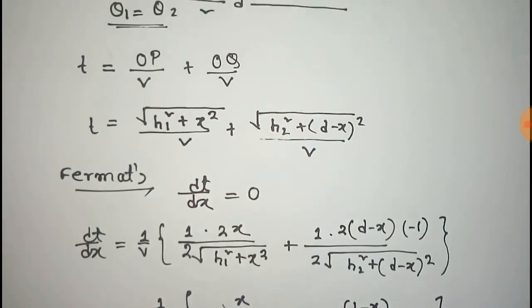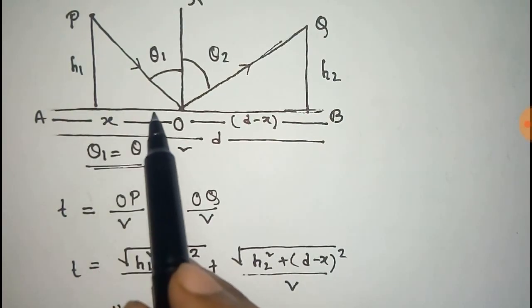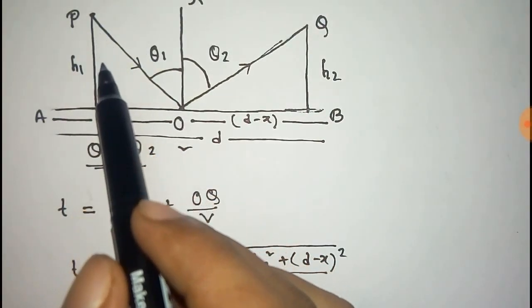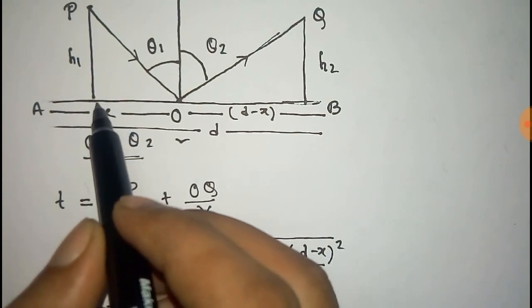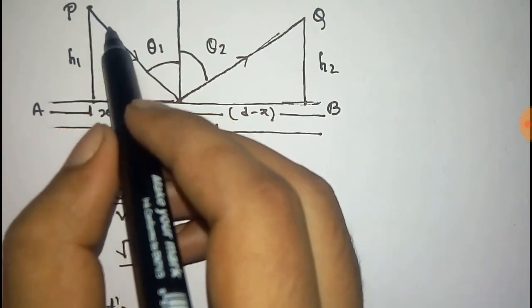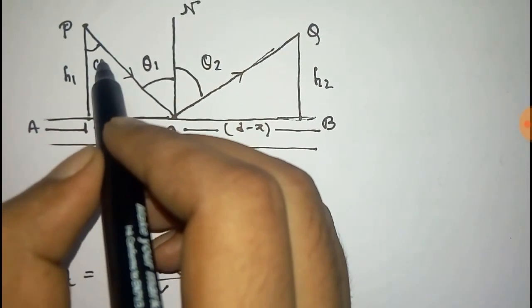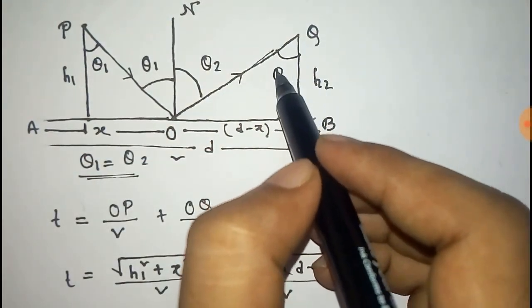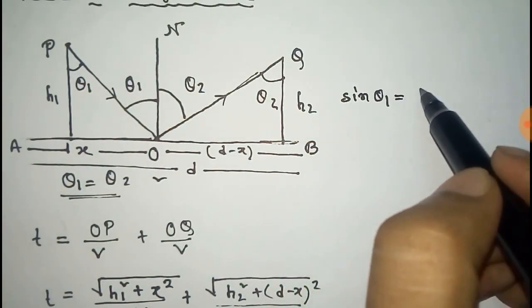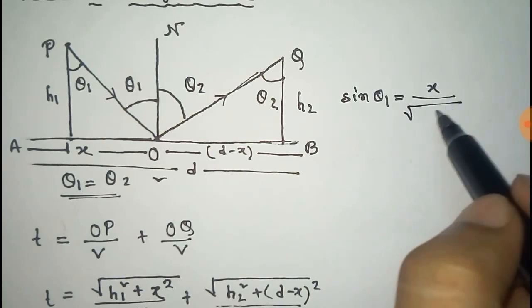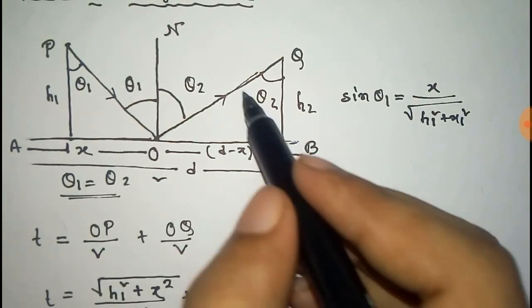Now, X over root over (H1 squared plus X squared) can be written as sin theta 1. Here, X is the horizontal distance and this is H1, so the hypotenuse is root over (H1 squared plus X squared). This angle is theta 1, and correspondingly that angle is theta 2. So we can write sin theta 1 equals X over root over (H1 squared plus X squared), and sin theta 2 equals (D minus X) over root over (H2 squared plus (D minus X) squared).